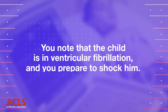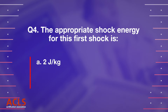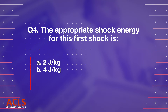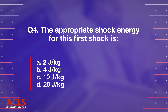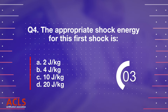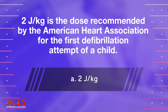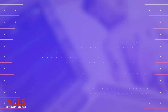Question 4: The appropriate shock energy for this first shock is: A) 2 joules per kilogram, B) 4 joules per kilogram, C) 10 joules per kilogram, D) 20 joules per kilogram. Correct answer: A) 2 joules per kilogram.